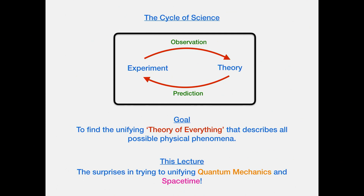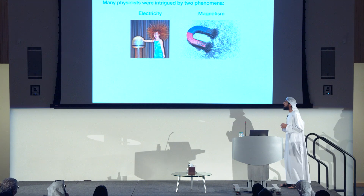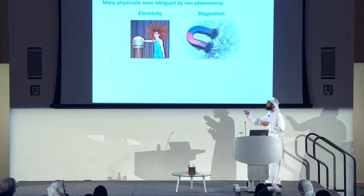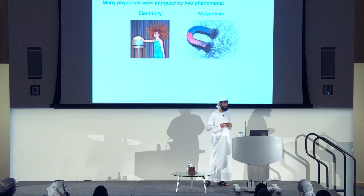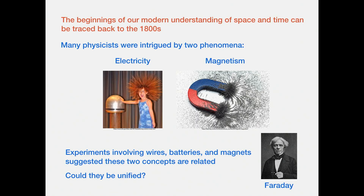This lecture will be about surprises in combining different ideas together — in particular, combining quantum mechanics and space time. Let me begin with space time. The beginnings of our modern understanding of space and time can be traced back to the 1800s, when many physicists were intrigued by two phenomena: electricity and magnetism. Many experiments at the time, pioneered by Michael Faraday involving wires, batteries, and magnets, suggested that these two concepts are related somehow. The question was: can you unify them consistently?